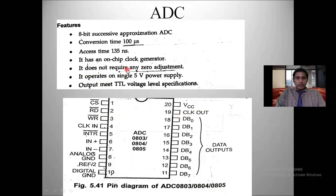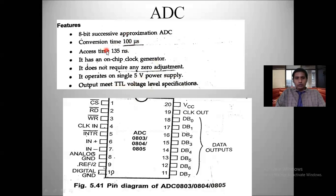There is a relation between clock frequency and R and C values, which we will see in the pin description. Zero adjustment is not required here. It operates on a single 5-volt power supply. Another advantage is it meets TTL voltage level specifications — TTL means Transistor-Transistor Logic. So the conversion time is up to 100 microseconds, it has an on-chip clock generator, requires 5V supply, supports TTL voltage levels, has 135 ns accessing time, and converts analog to 8-bit digital data.